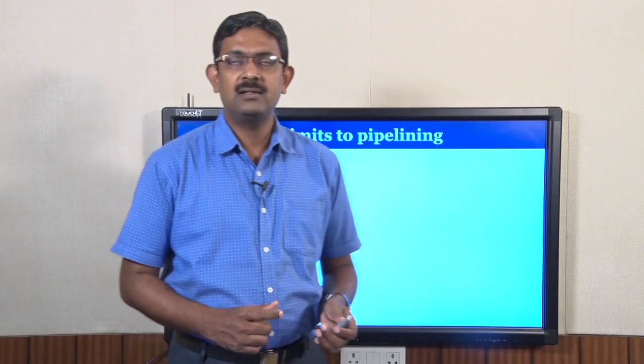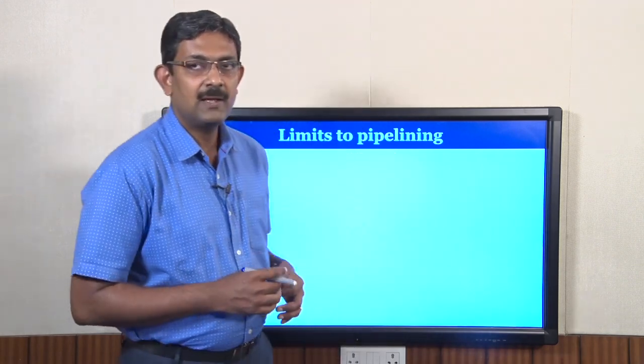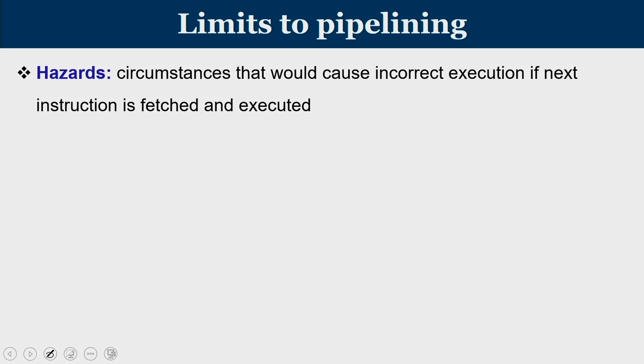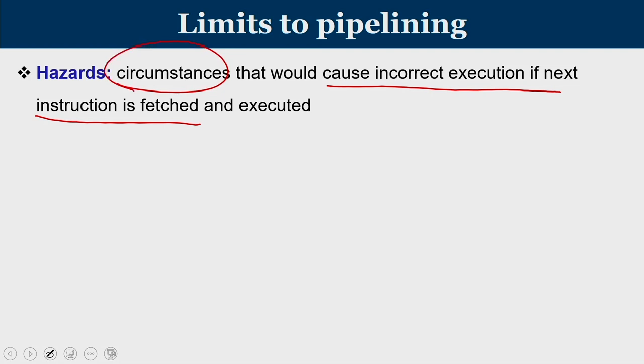Now let us understand when this pipeline is not going to work. So far we have seen only the ideal case, but we would not get such ideal cases always. Hazards are circumstances that could cause an incorrect execution if the next instruction is fetched and executed in certain scenarios — if you bring the next instruction in the very next clock cycle and try to execute it, it can lead to an incorrect result. So this we have to address.